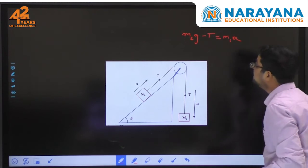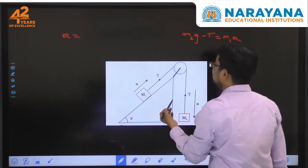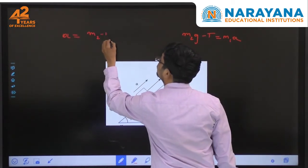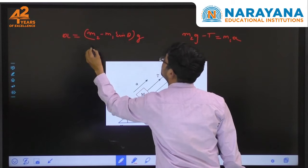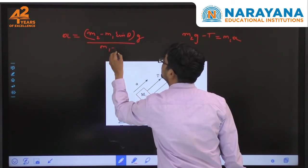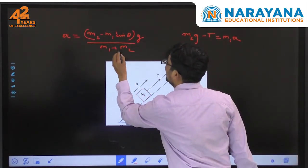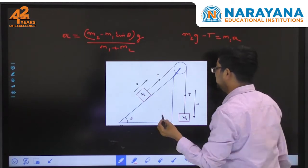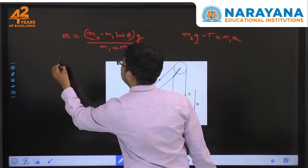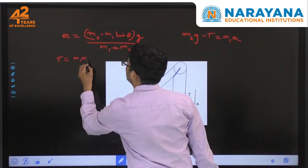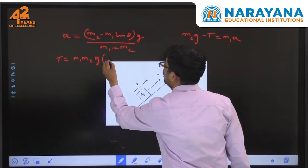The acceleration a equals (m2 minus m1·sin θ) times g, divided by (m1 plus m2), since we have two masses. And the tension T equals m1·m2·g times (1 plus sin θ), divided by (m1 plus m2).